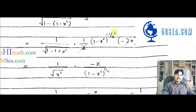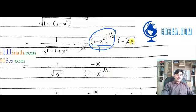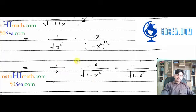So the side work result is that (1 minus x squared) to the power minus 1/2 in the denominator, combined with the minus x, gives minus x over (1 minus x squared) to the power plus 1/2.